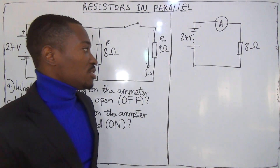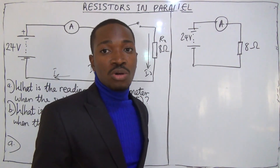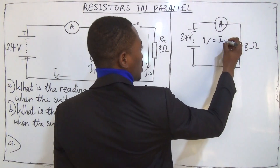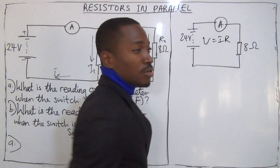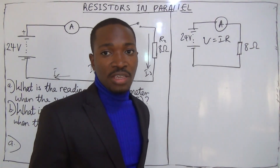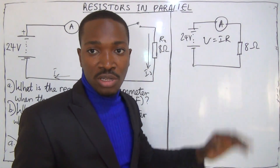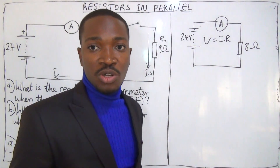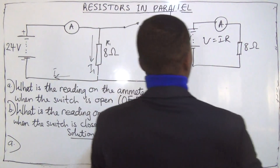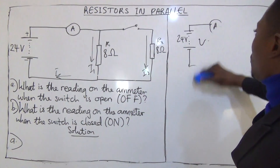How do you find the current in this case? You just say V equals IR. According to Ohm's law, V equals IR. If you find the value of I, you get the current flowing in the circuit. The diagram is not part of the solution, so let us start solving it.